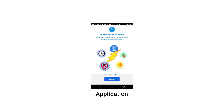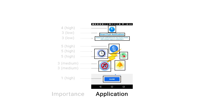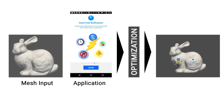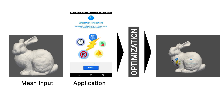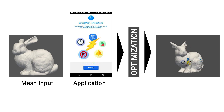For each cell, we compute a quality value for integrating 2D applications. We use applications from the RICO dataset that consist of multiple elements and have information about their hierarchy and importance. Our optimization then assigns elements of the applications to positions on the mesh geometry based on factors such as element importance, hierarchy, and quality of the geometry.